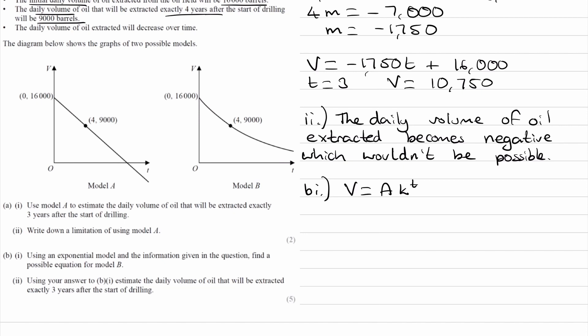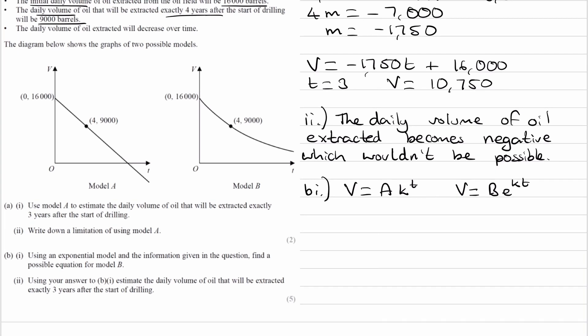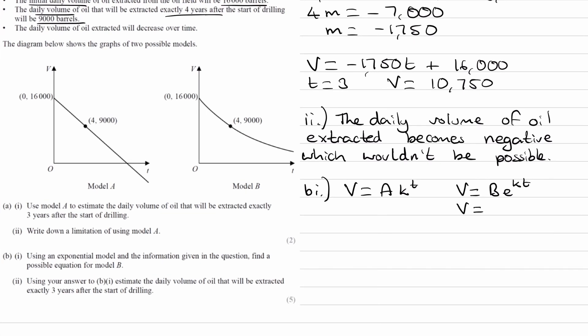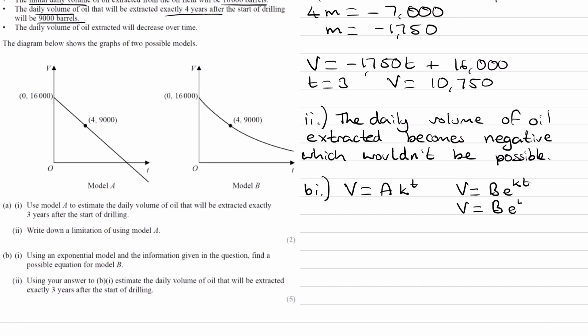Another way we can write this is V equals some constant, let's say b, times e to the power of kt. The reason these two achieve the same effect is because we can rewrite this right-hand side as b times e to the power of k raised to the power of t, and e to the power of k is just another constant, which I'll call a.